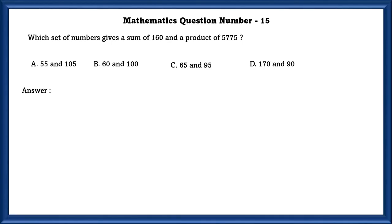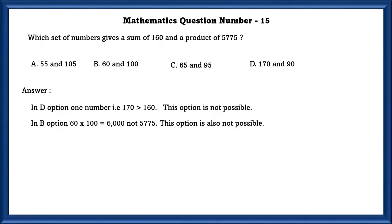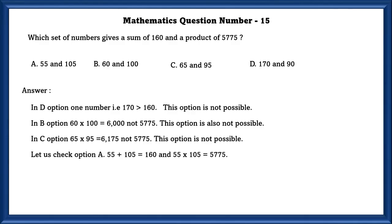Mathematics question number 15. Which set of numbers gives a sum of 160 and a product of 5,775? Option D has a number 170 which is greater than 160, so it's not possible. Option B: 60 × 100 = 6,000, not 5,775. Option C: 65 × 95 = 6,175, not 5,775. That leaves option A: 55 + 105 = 160, and 55 × 105 = 5,775. So option A is correct.